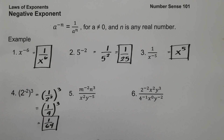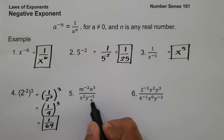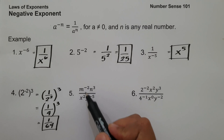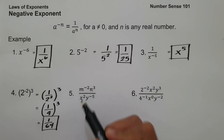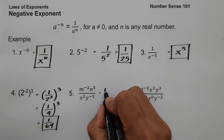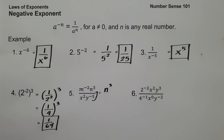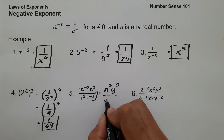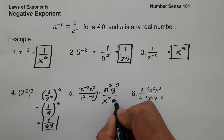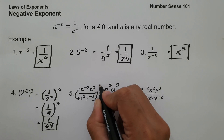On example number five, we have m raised to negative 2, n raised to 3, all over x squared, y raised to negative 5. To eliminate all negative exponents, we move m raised to negative 2 to the denominator and move y raised to negative 5 to the numerator. This gives us n raised to 3 times y raised to 5 in the numerator, over x squared times m squared in the denominator. And this will be our answer.